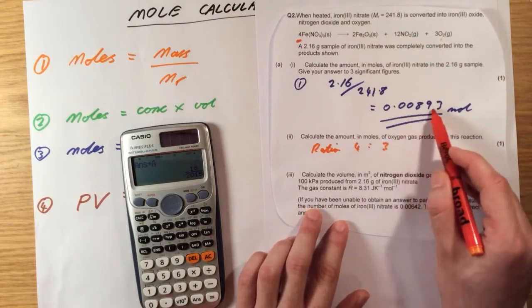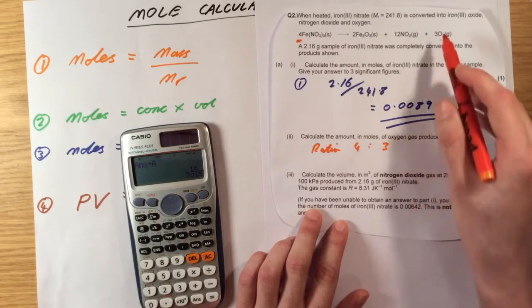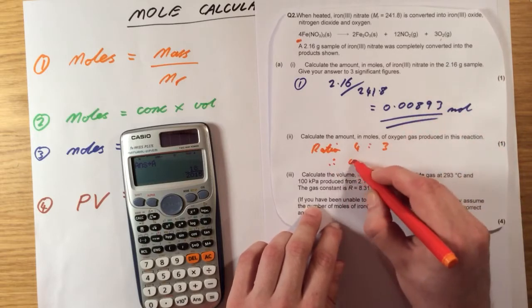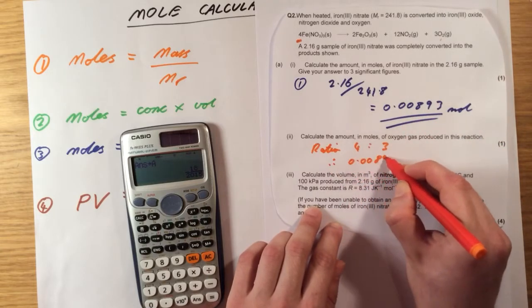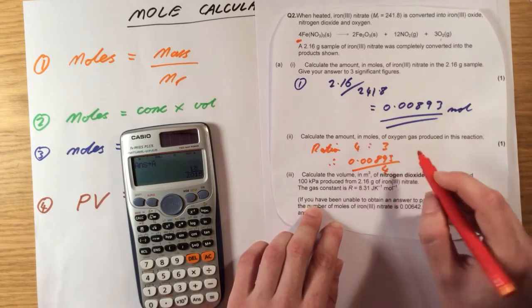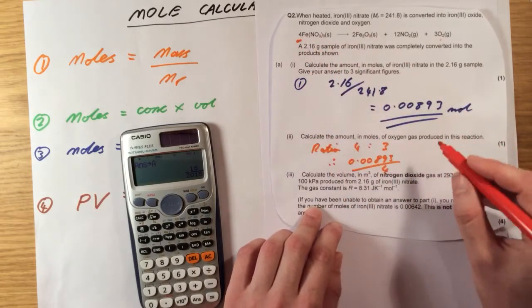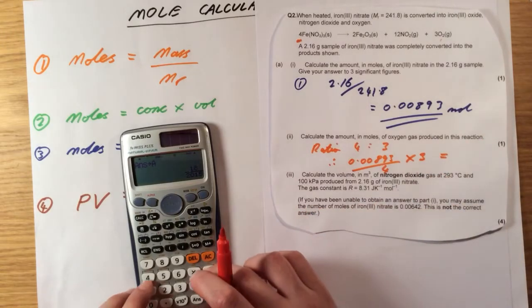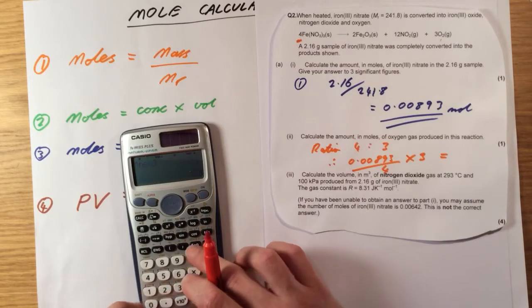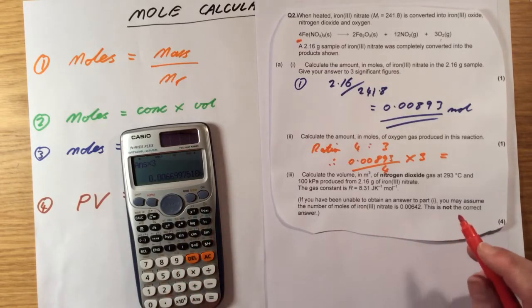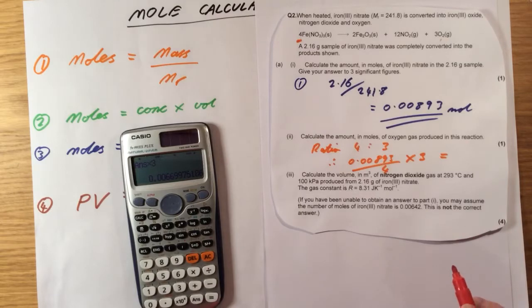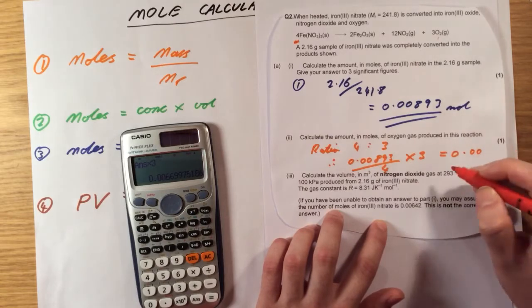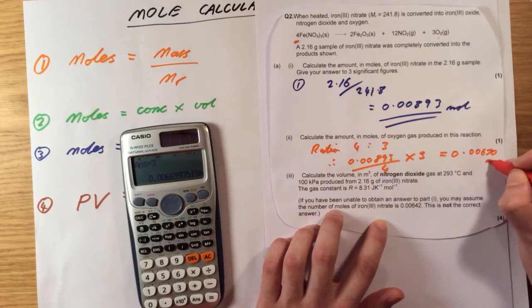So I'm actually going to have slightly under this number of moles of oxygen produced. The way to actually calculate this is to do my answer there. So 0.00893 divided by 4, because that would give me 1 mole if you like, then times by 3. So my answer here, divided by 4, times by 3, gives me 0.00669 and a bit. If we actually were rounding this up, that's going to be 0.00670 moles of oxygen.